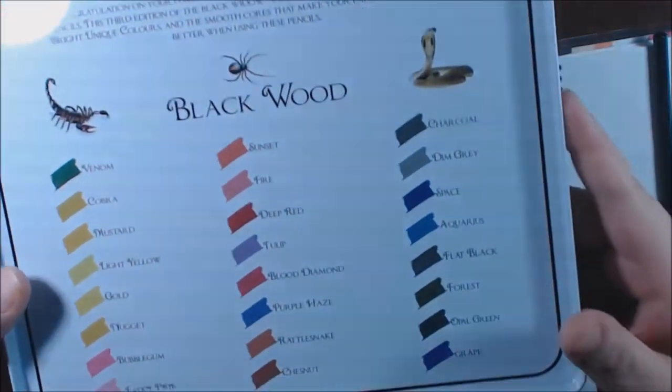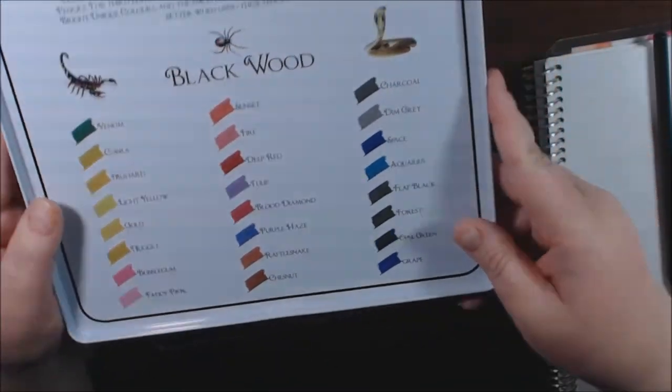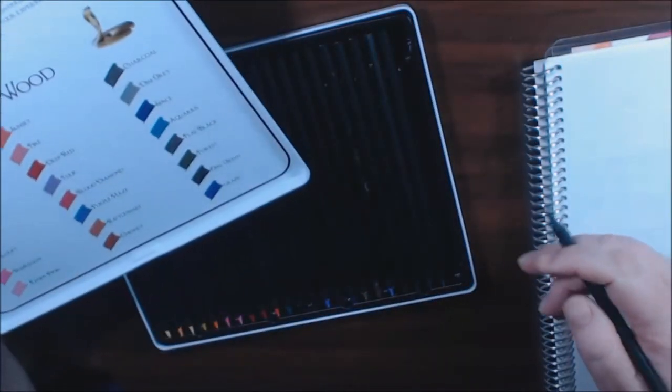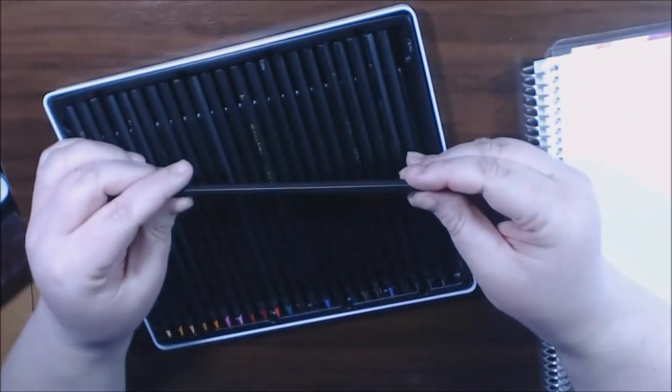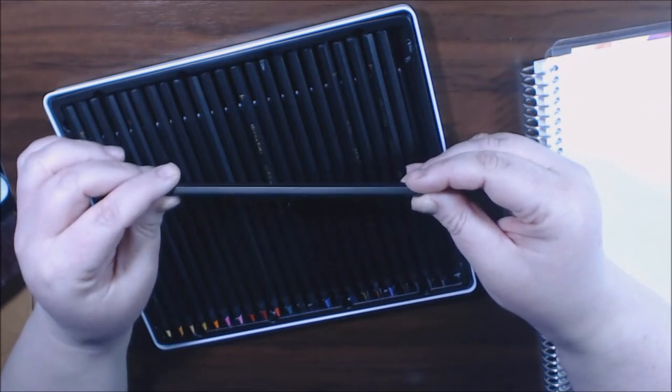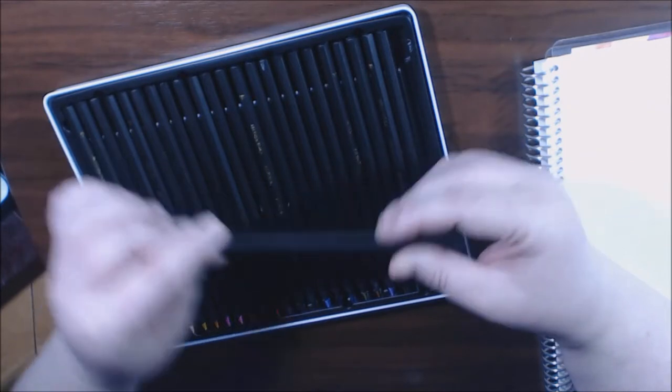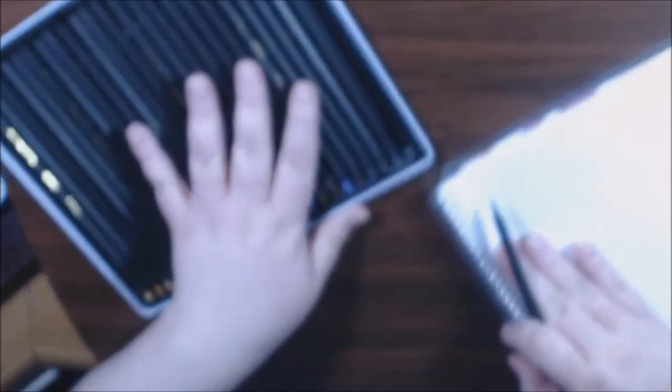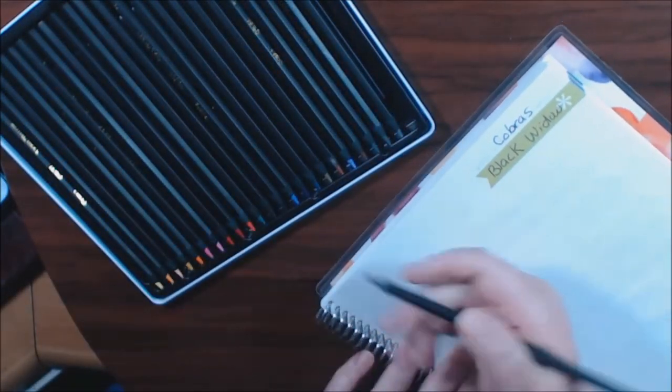And some really pretty colors on here. I like that they are numbered. They say like Cobra CB80 and then there's a color. This one is called Space. So I'm just going to start swatching here.